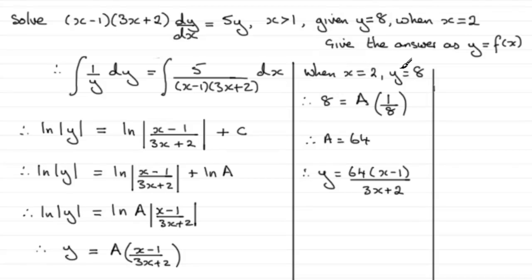So when I put x = 2, y = 8 into this line here, I get ln(8) = ln(1/8) + c. I don't even need a mod sign around it because it's a positive value.